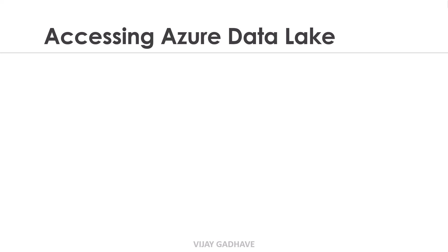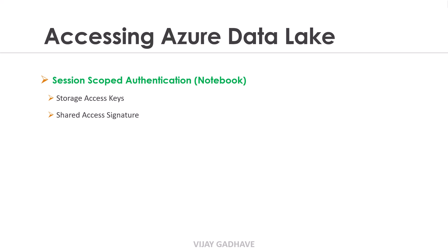In this video we are going to understand how to access the Azure Data Lake Storage. We can access the Azure Data Lake Storage using the session scoped authentication, where we have to use the Databricks notebook. There are three ways: using the storage access keys, using the shared access signature, and using the service principal.